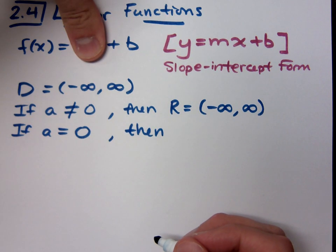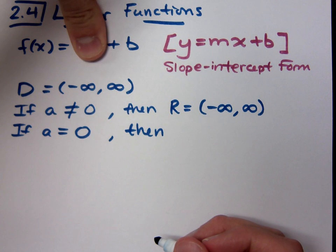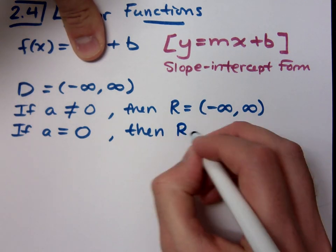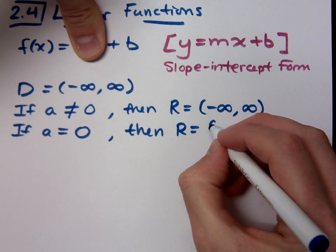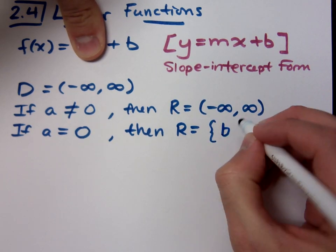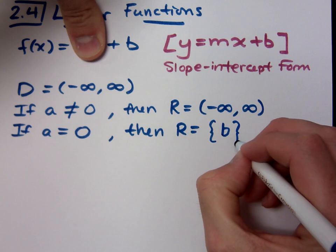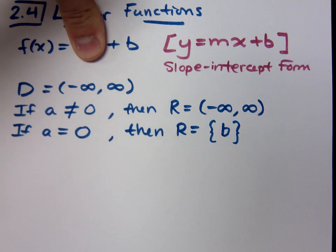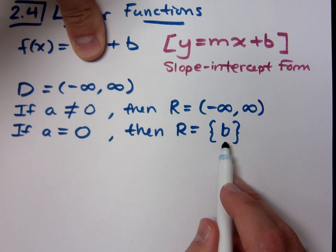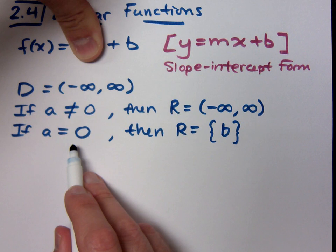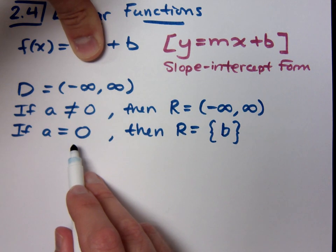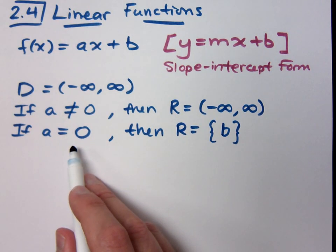It doesn't matter what I plug in for x, I'd always get out b, which means that the range would be just the number b. The way that we express that is we use set notation. The range contains only the number b if you have a zero for the coefficient of x.